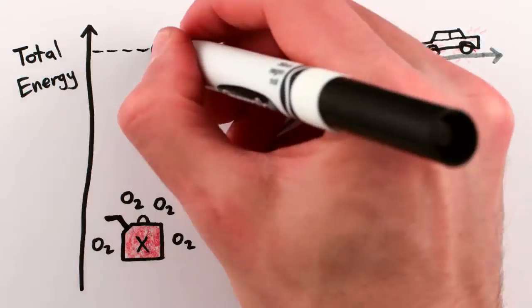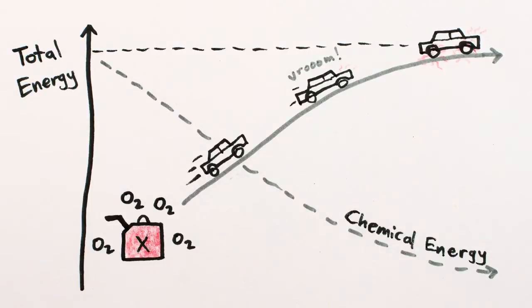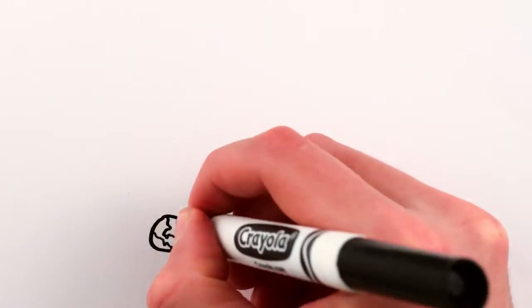The total energy of the world remains constant during the trip, but useful chemical energy is converted into useless high-entropy heat and noise. The energy is still there, but we can't reclaim it to power any more cars, as convenient as that would be.